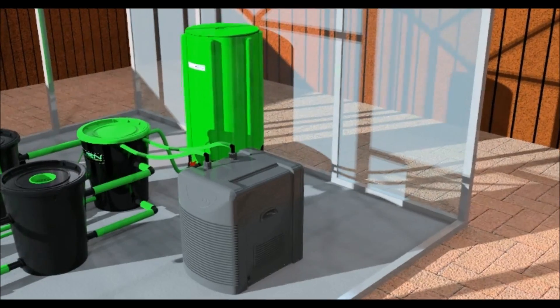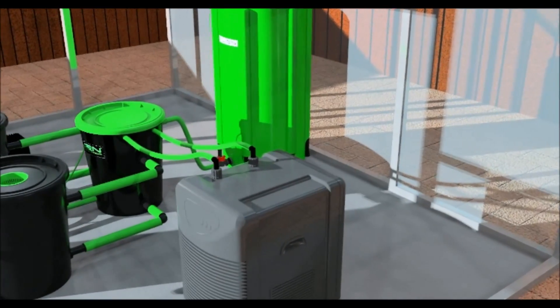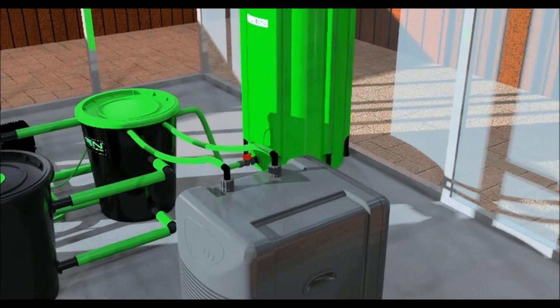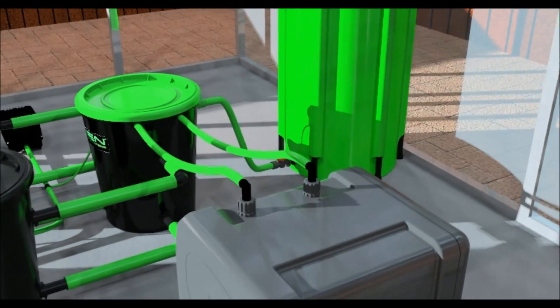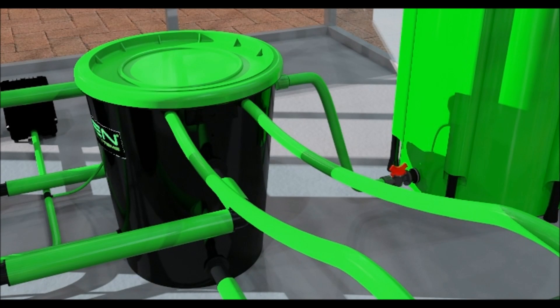Drill two 26mm holes either in the lid or on the side of the header pot as high up as possible. For chillers up to 300 litres, 16mm alien green pipe is used to connect the chiller to the system. For chillers 300 litres and above, 19mm alien green pipe is used.